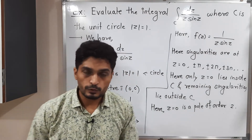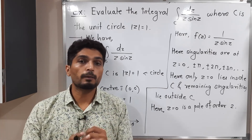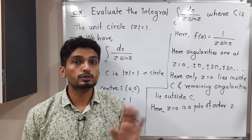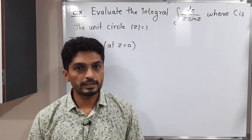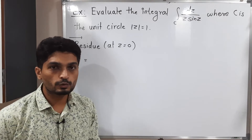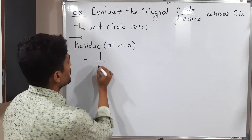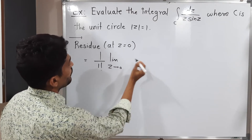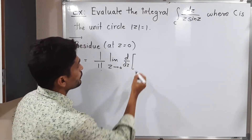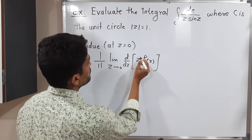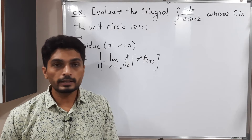Now we have to find the residue. There are three techniques: the definition, a formula for a simple pole, and a formula for a pole of order M. Since we have a pole of order 2, we use the formula for pole of order M. The formula is: (1 / (M-1)!) · lim[z→0] of the (M-1)th derivative of (z - z₀)^M · F(z). With M = 2 and z₀ = 0, this becomes the limit as z→0 of the derivative of z² · F(z). Substituting F(z) = 1/(z · sin z), the z terms partially cancel to give d/dz [z / sin z].